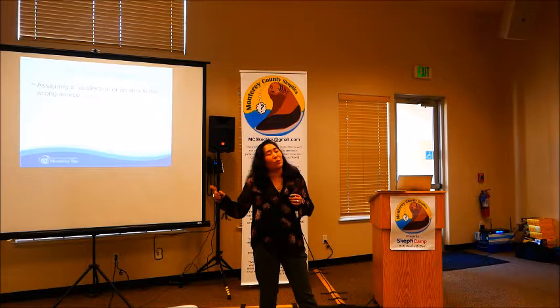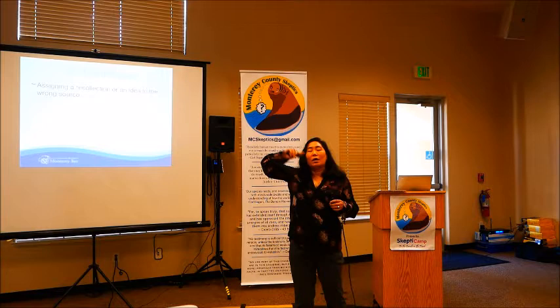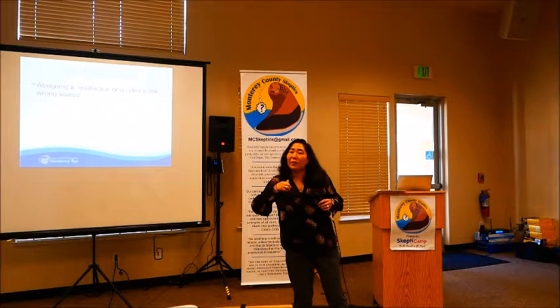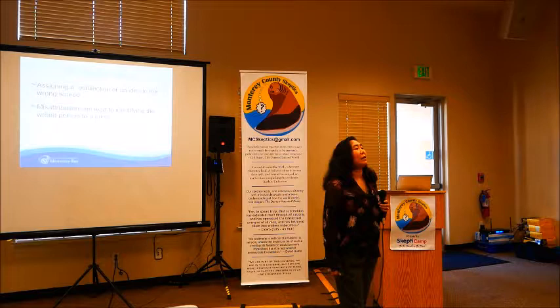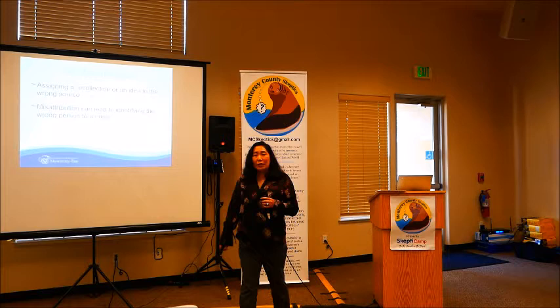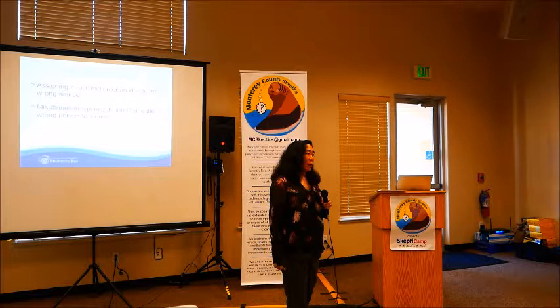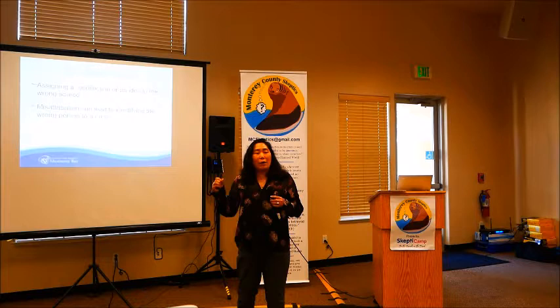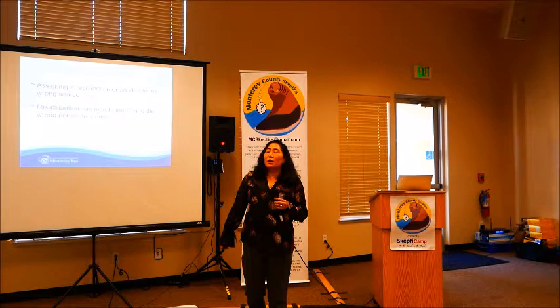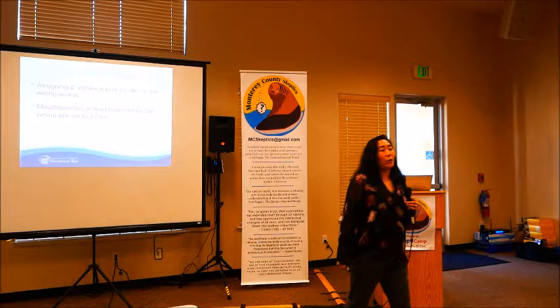Misattribution is assigning a recollection or idea to the wrong source. This is one reason why suggestibility can be so strong — because you don't remember that another person told you something; you remember it as part of your own memory. Misattribution can lead to identifying the wrong person for a crime. There was an actual case where a woman was assaulted in her home while watching television. The TV was on, and after the perpetrator left, she gave a full description to police — an accurate description of the person on television, without knowing it.